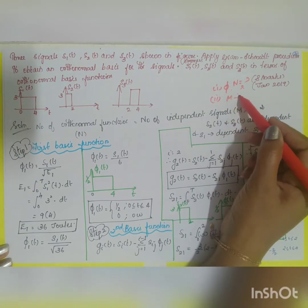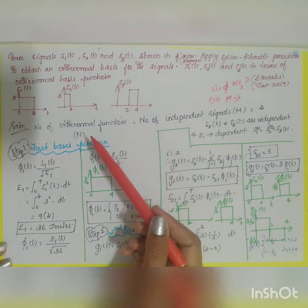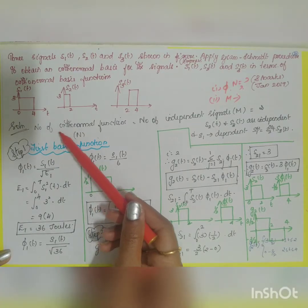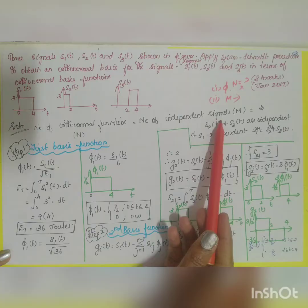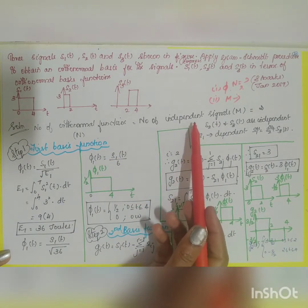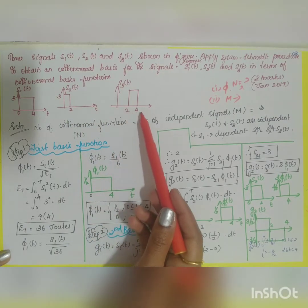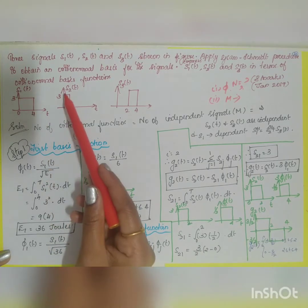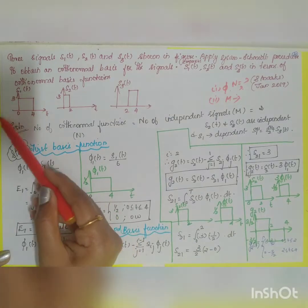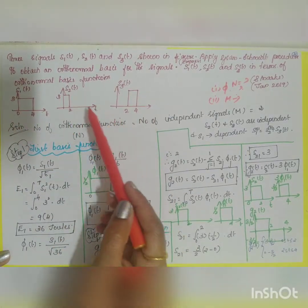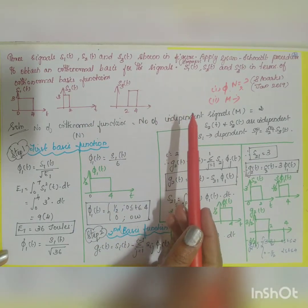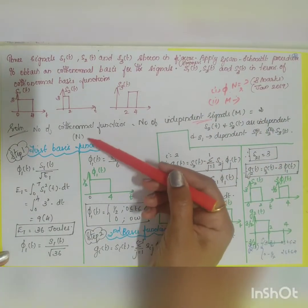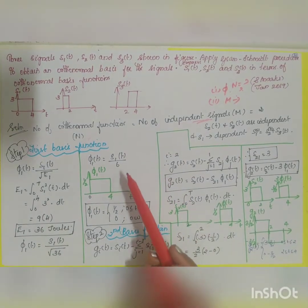As seen in the previous problem, let us find out how many independent signals we have. The number of orthonormal functions n equals the number of independent signals m. The signals span 0 to 2 and 2 to 4, so adding these gives 0 to 4. We can write s1(t) = s2(t) + s3(t), which means s1(t) is linearly dependent. The remaining two, s2(t) and s3(t), are linearly independent, so m = 2 and therefore n = 2.